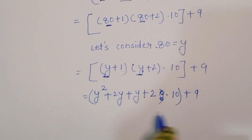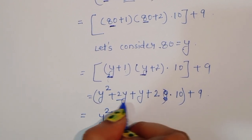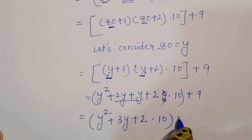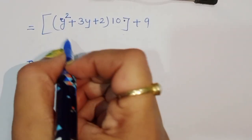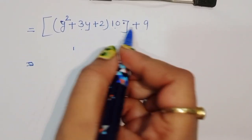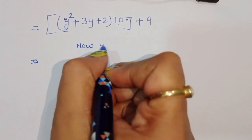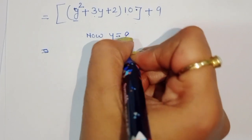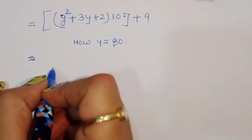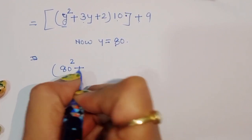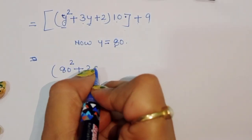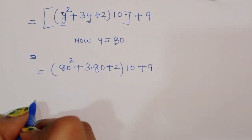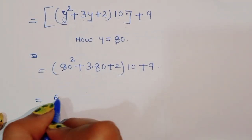Expanding (y plus 1)(y plus 2): y times y gives y squared, plus 2y plus y, that is 3y, plus 2. So we have (y squared plus 3y plus 2) times 10 plus 9. Now substituting y equal to 80, we get 80 squared plus 3 times 80 plus 2, all times 10, plus 9.